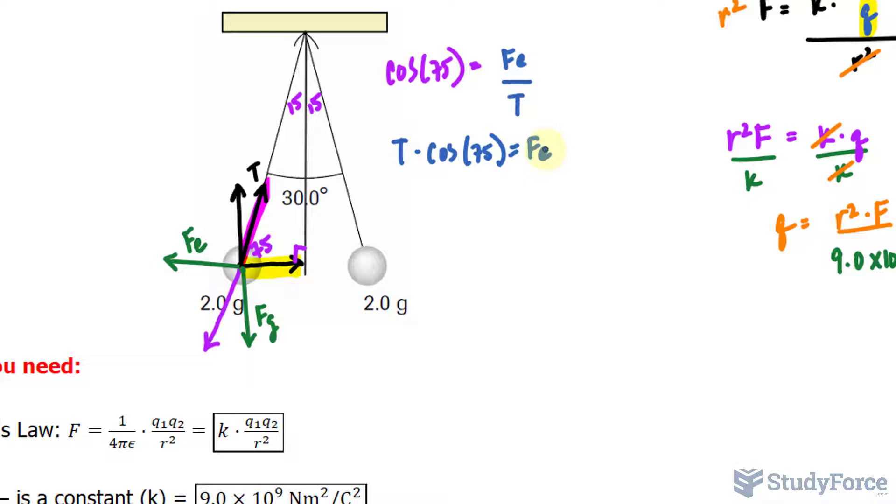Similarly, if I use sine at an angle of 75 degrees, that relates opposite and hypotenuse. The opposite being the magnitude of this vector, and that vector is Fg, over the hypotenuse, which is the tension. Let's go ahead and solve for force in this equation.